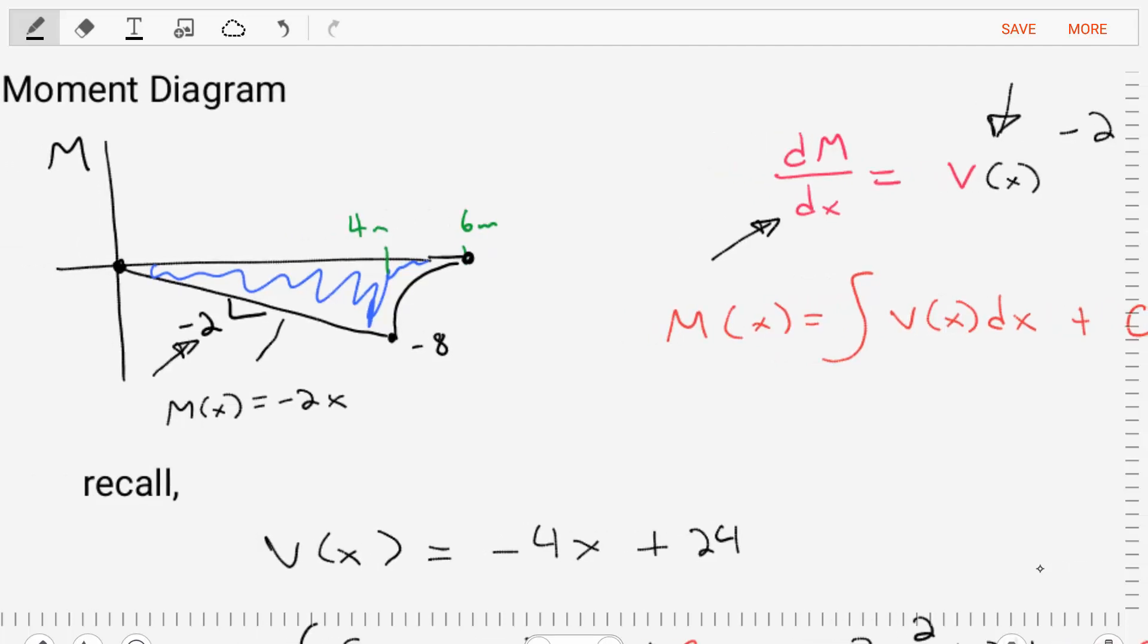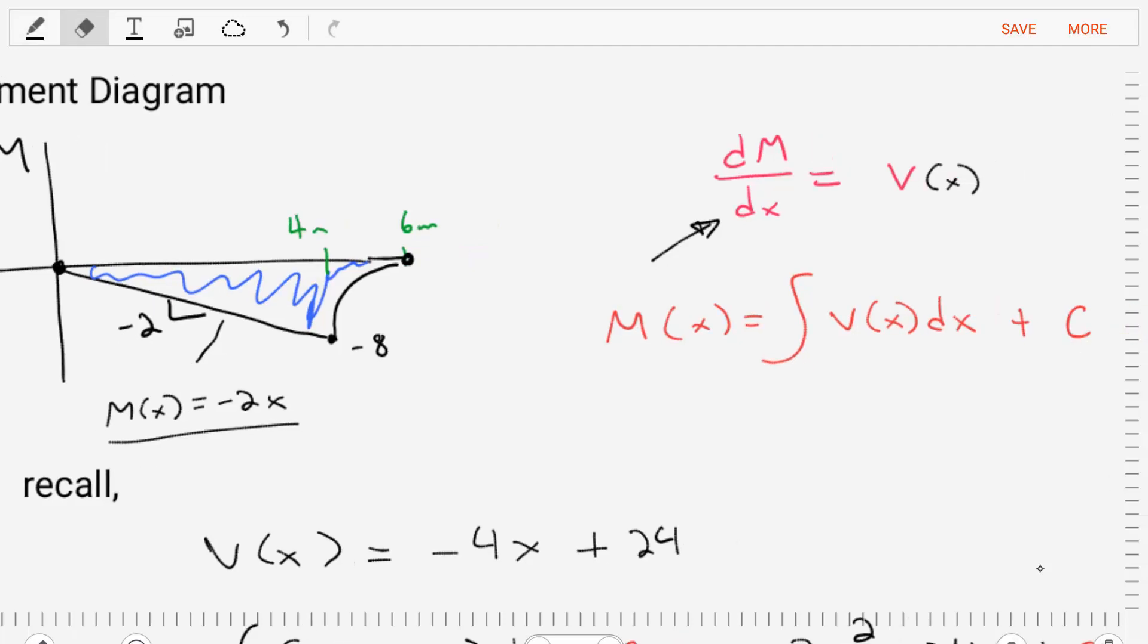And so we put a linear slope of negative two here. And we can describe this line as simply negative two times x. That is the line from zero to four meters. That's the line for the moment. Just that simple.